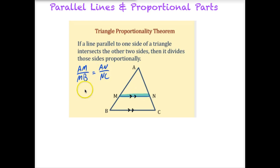For example, we have our proportion set up here. AM, this portion here, compared to MB here, is going to be in the same proportion as AN on this side of the triangle is to NC down here. These aren't the only proportions that we can create based on this Triangle Proportionality Theorem.